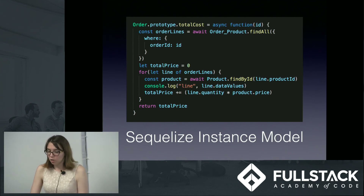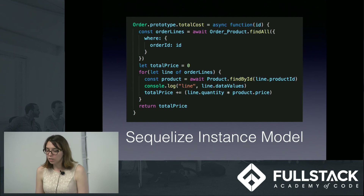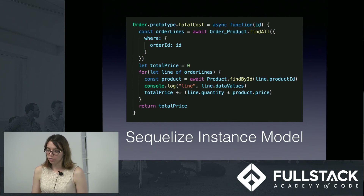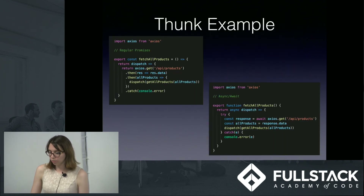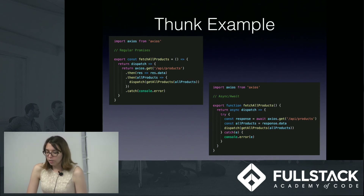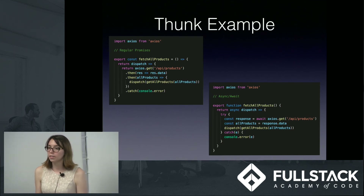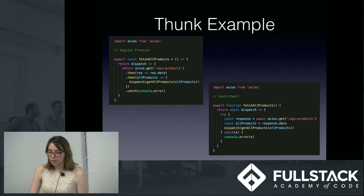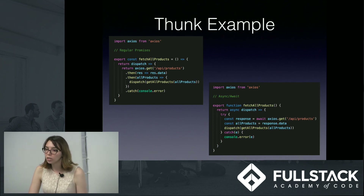Async/await's way of making async code more synchronous makes it much easier to do complex asynchronous calls. To use async/await for the Express and Sequelize examples, all you need is the latest version of Node installed — anything version 8 or above should work. Here we have a thunk example on the front end. This thunk is fetching all of our products and dispatching them to the store. Our dot-thens can be replaced by assigning the values into variables and awaiting their response. Then we can take our products and dispatch them to the store and catch our errors. Our thunk is now much more clear and easy to read.